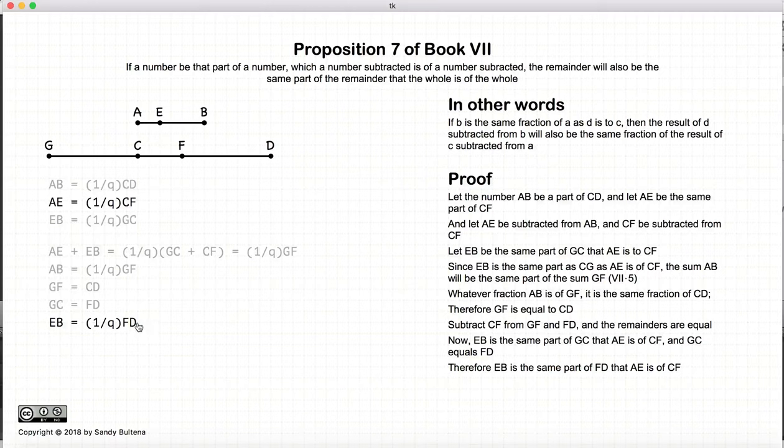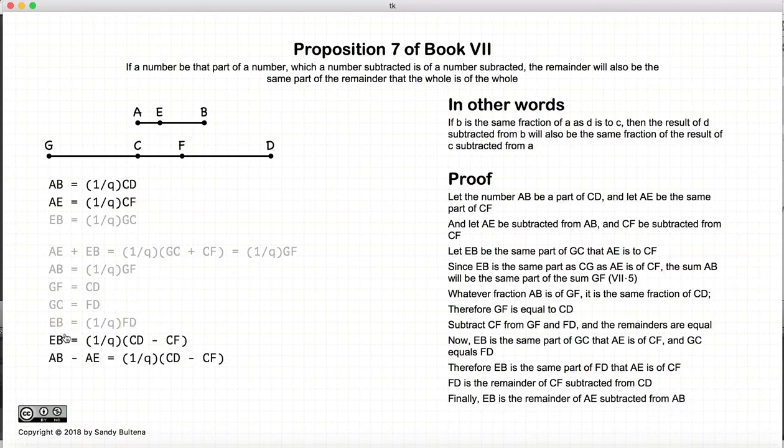but fd is equal to cd minus cf. fd is equal to cd minus cf, and eb is equal to ab minus ae. So now we have that if ab is a certain fraction of cd and ae is a certain fraction of cf, if we subtract the two, then we have ab minus ae is also the same fraction of cd minus cf.